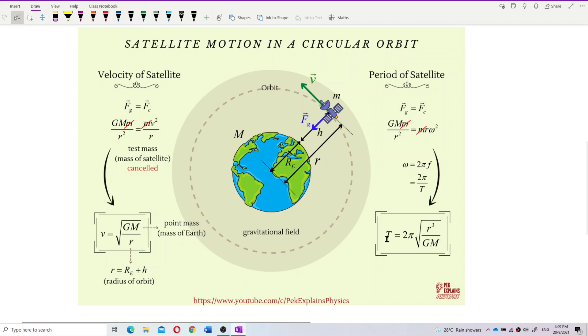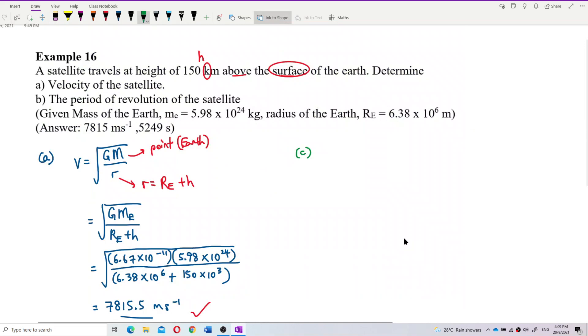Again, this r is the radius of the orbit, radius of the orbit, meaning taking the radius of Earth plus h. And m here is the mass of the Earth.